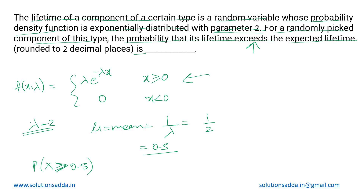We will perform this integration: λ times e raised to minus λx dx, where the lifetime has to exceed 0.5 and the maximum can be anything, so we put the upper limit as infinity. This is the probability we want to find out.